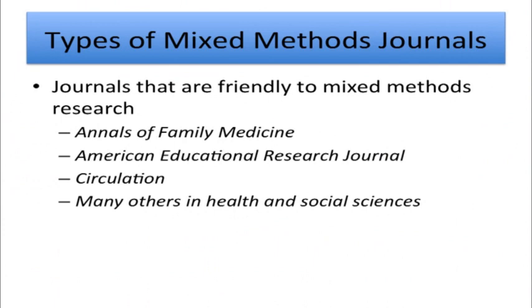The third category would be journals that I see as being friendly to mixed methods research. This list of journals is growing all the time. Some that come to mind immediately would be the Annals of Family Medicine, the American Educational Research Journal, even journals in cardiology like Circulation, and many other health and social science journals. These are journals that are publishing mixed methods studies and discussions about how to do mixed methods research.